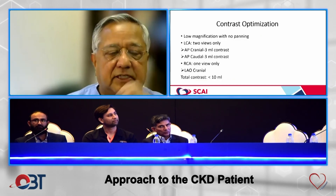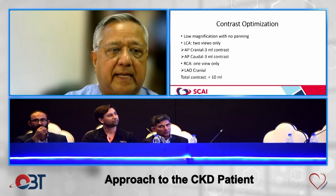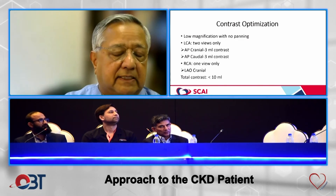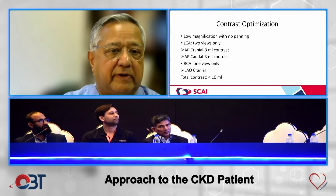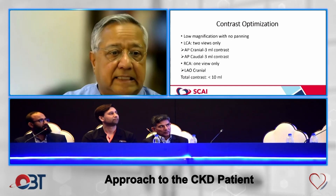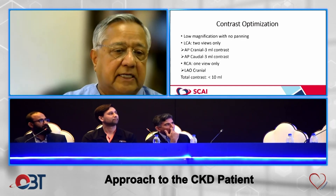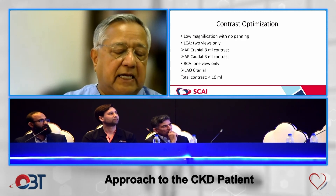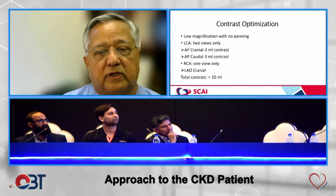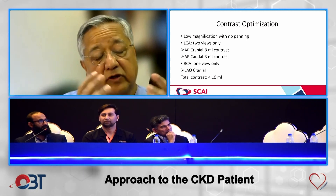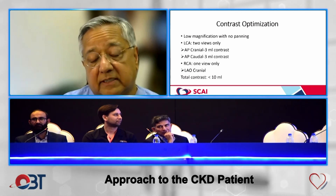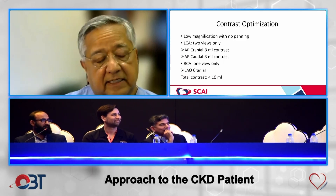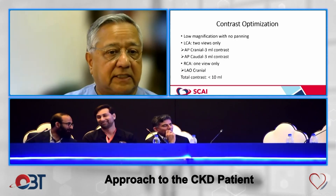For contrast optimization, use low magnification and low panning. For the left coronary artery, obtain only two views — such as an AP caudal and a spider or cranial view — and inject three cc's of contrast per view. For the RCA, get an LAO cranial view. With a modern camera you can visualize everything in less than 10 mL, which is all you need for a diagnostic study.